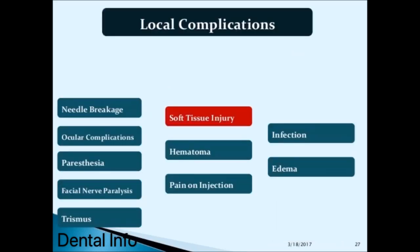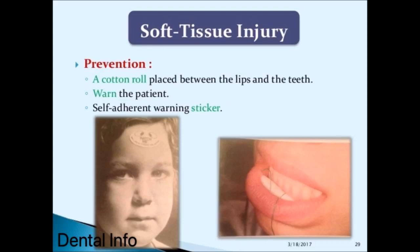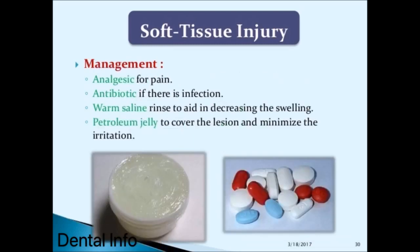Soft tissue injury involves trauma to the lip or tongue caused by biting or chewing these tissues while still anesthetized, especially in children. Prevention: place a cotton roll between the lips and the teeth, warn the patient, and use a self-adherent warning sticker.